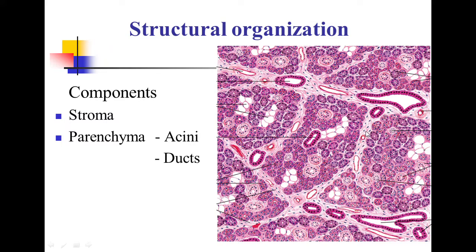Parenchyma consists of lobes and lobules. Within the lobules, you can see multiple acini and ducts. So the parenchyma consists of acini and ducts, while the stroma is the connective tissue component consisting of the capsule and connective tissue septa.